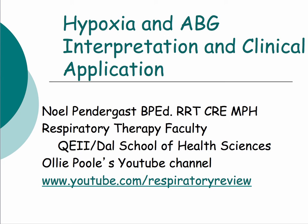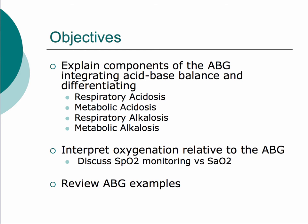We've got quite a few slides to get through, so we'll get started. The objectives of this presentation are to go through some components of the arterial blood gas, integrate acid-base balance, and talk through disturbances including respiratory acidosis, metabolic acidosis, respiratory alkalosis, and metabolic alkalosis. We'll also look into oxygenation concepts and differentiate SpO2 from SaO2, and then go through some ABG examples at the end to tie everything together.